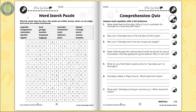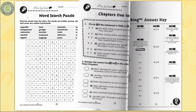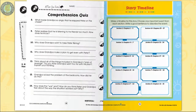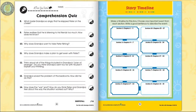A word search puzzle and comprehension quiz ends the unit. The easy marking answer key works by lining up perfectly with the matching question pages. Three color posters, which are graphic organizers, complete the resource.